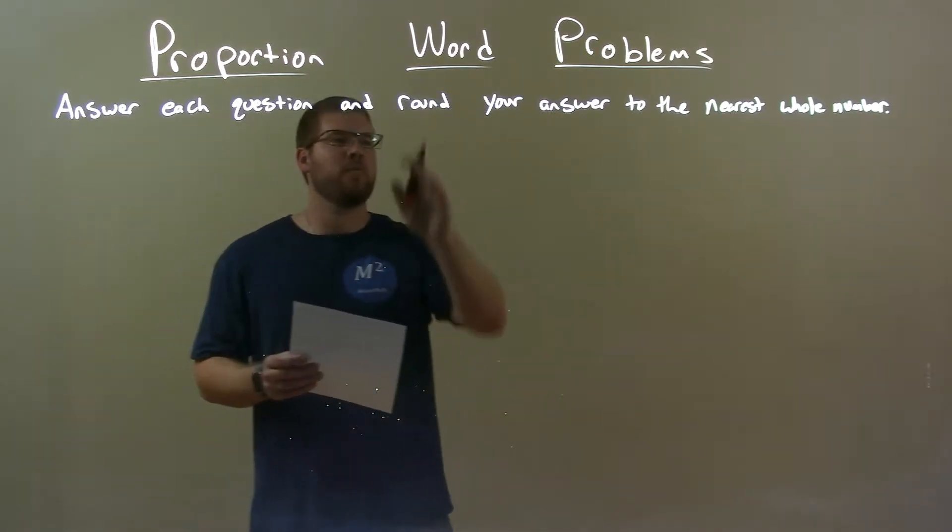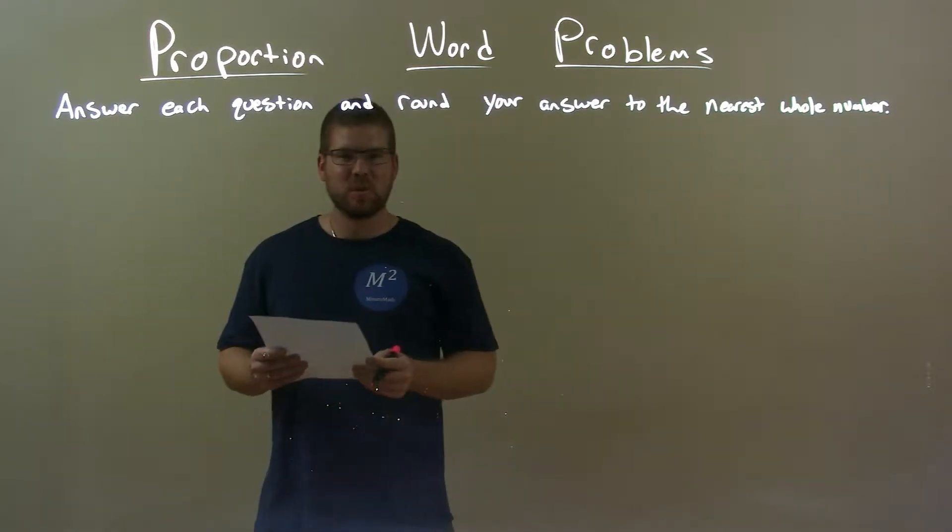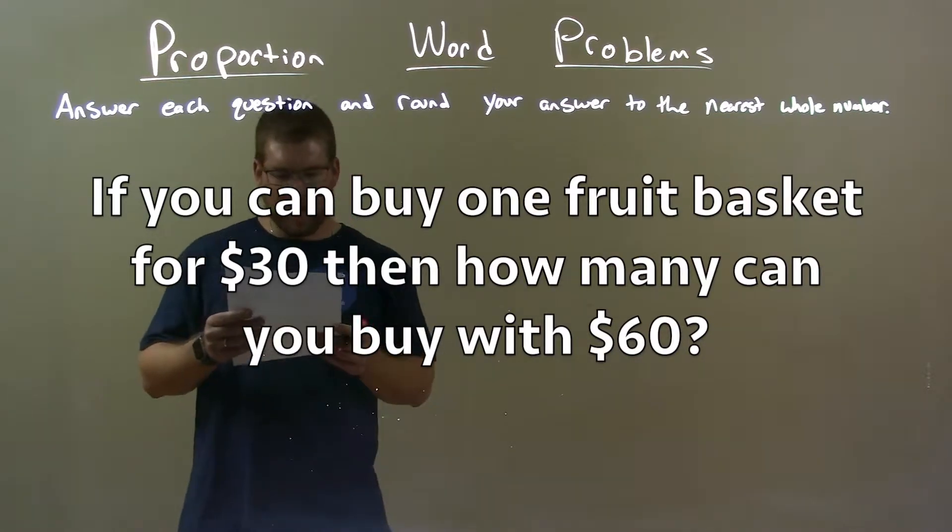We're going to answer each question and round your answer to the nearest whole number. If I was given this word problem, if you can buy one fruit basket for $30, then how many can you buy with $60?